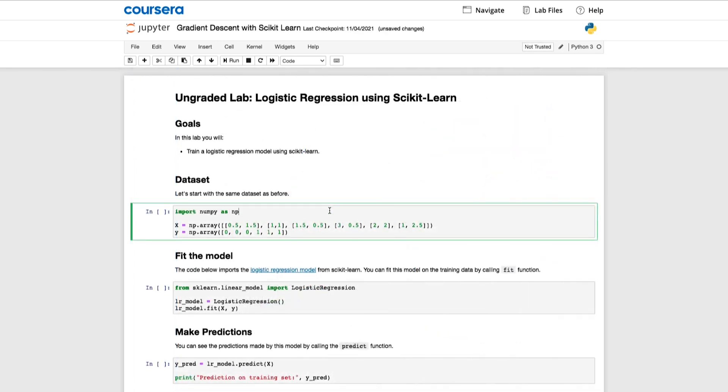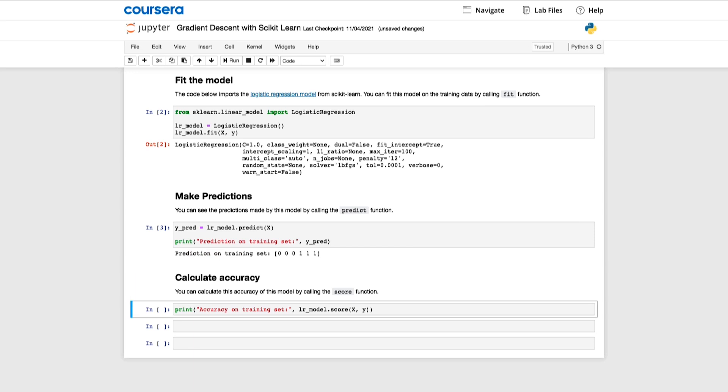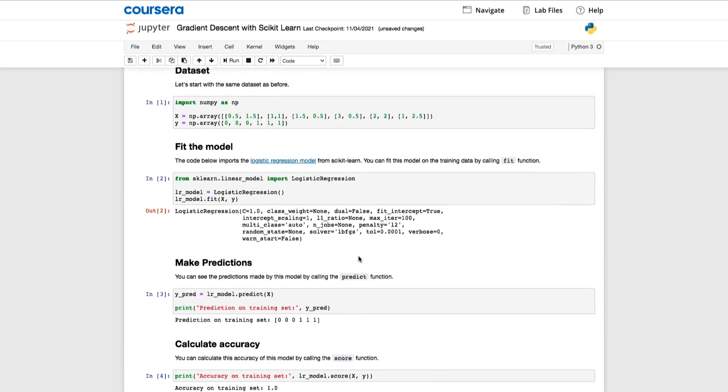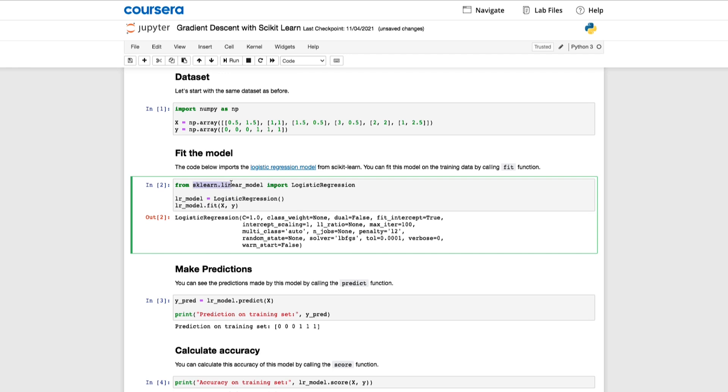There will be another optional lab after that, which is short and sweet, but also very useful because it'll show you how to use the popular scikit-learn library to train the logistic regression model for classification. Many machine learning practitioners in many companies today use scikit-learn regularly as part of their job, and so I hope you check out the scikit-learn function as well and take a look at how that is used.